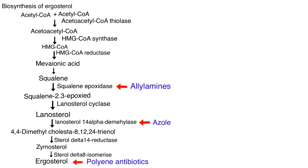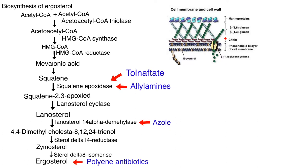Caspofungin blocks the synthesis of beta-D-glucan synthase. Beta-D-glucan is an essential component of the cell wall of numerous fungal species — it forms a solid three-dimensional matrix that gives the cell wall its shape and mechanical strength. Inhibition of beta-D-glucan synthesis produces a double effect: both fungistatic and fungicidal.